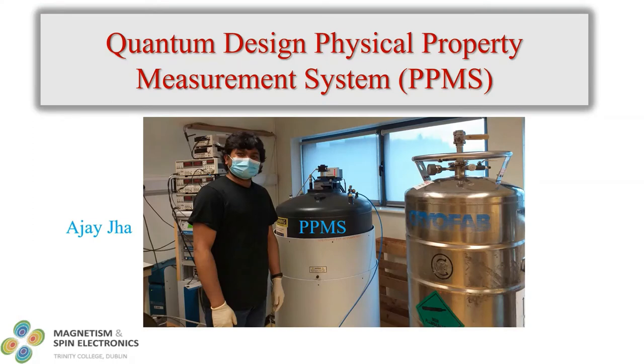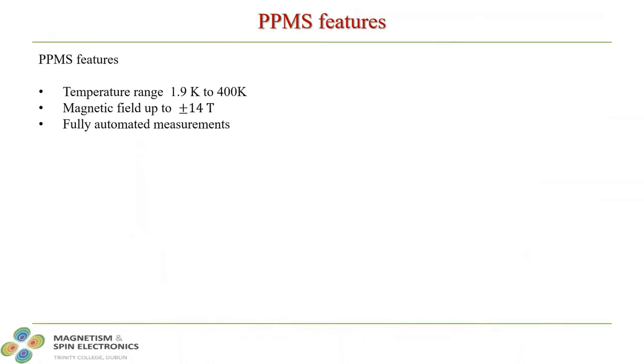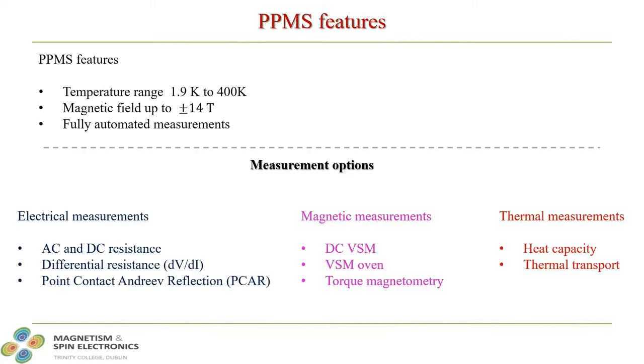Hello and welcome to my presentation. My name is Ajay Jha. I am a PhD student in Magnetism and Spin Electronics Group at Trinity College Dublin. In this presentation, I will talk about some of the measurement options available in our Quantum Design Physical Property Measurement System. PPMS is a versatile tool where temperature and magnetic field can be varied in a wide range. It is a fully automated system with the normal temperature range from 2K to 400K and magnetic field up to plus or minus 14 tesla. The PPMS system allows us to measure various physical quantities of the sample such as electrical properties, magnetic properties, and thermal properties.